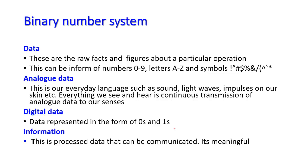Then we also have digital data. Digital data is data which is represented in the form of zeros and ones — the ones we call binary data. When data is inside the computer, it can be represented as zeros and ones. Then we have information. Information is processed data that can be communicated — it's meaningful. The computer has taken one plus one and processed it, gave us a result which is two, then communicated that two using output devices like the monitor or the printer. Now we can see that meaningful data which has been processed.